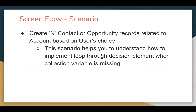Let's understand the required scenario first and then I will demonstrate how you can implement it. We need to create N contact or opportunity records related to an account based on the user's choice. Through ScreenFlow, we need to show two choices: contact or opportunity. If the user selects contact, N contact records should be created related to the account. Otherwise, N opportunities should be created. This scenario will help you understand how to implement a loop through a decision element when a collection variable is missing.